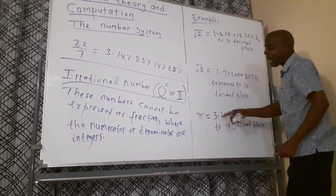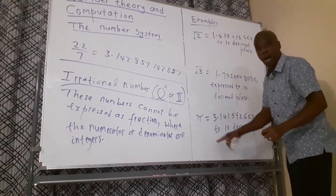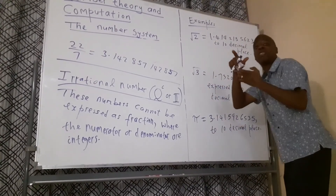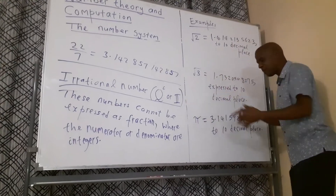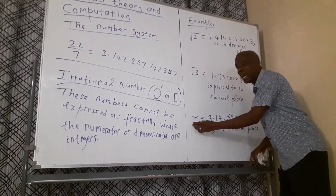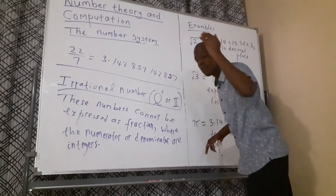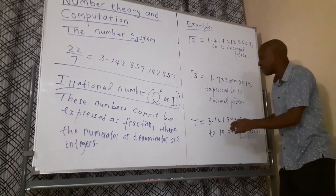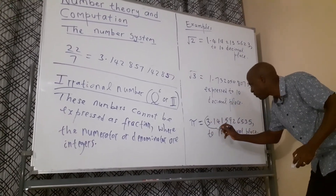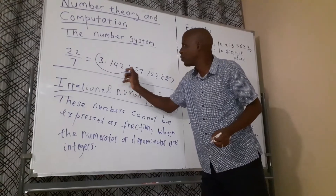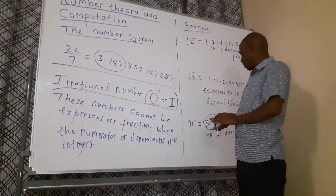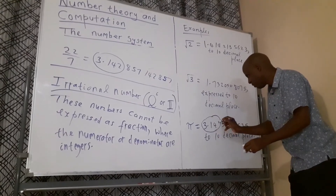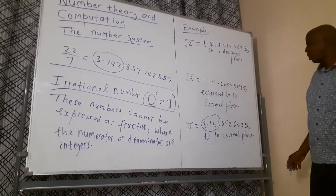Pi shows the ratio of the circumference of a circle to its diameter. 22 over 7 is the number closest to pi in mathematics — it looks like 3.142 to a few places, which is why we use 3.14 or 3.142 as an approximation. But pi must not be confused as equal to 22 over 7; 22 over 7 merely resembles pi.